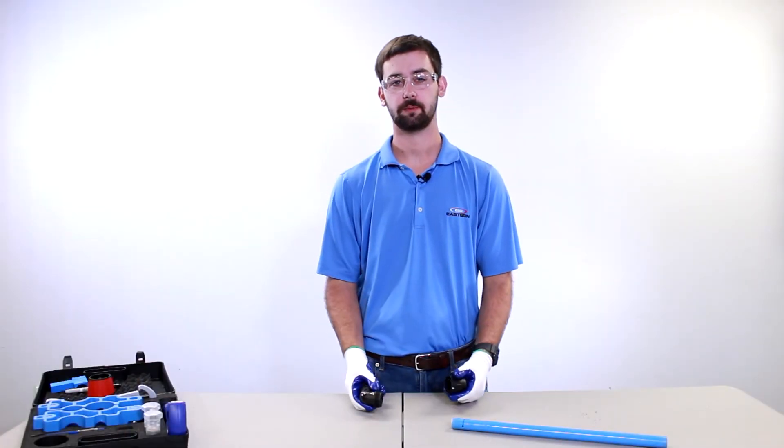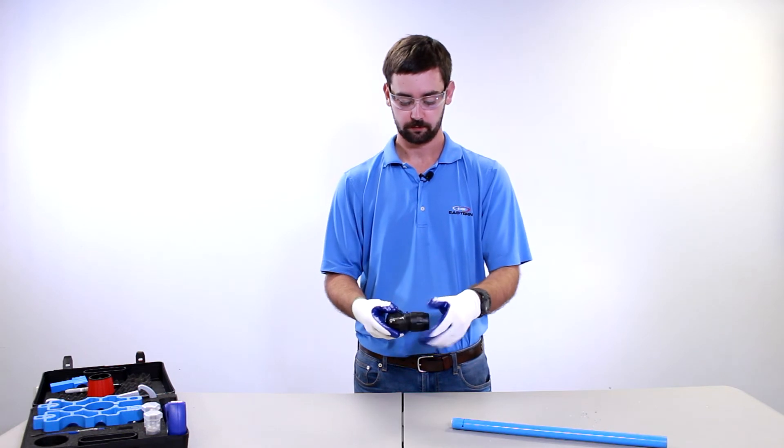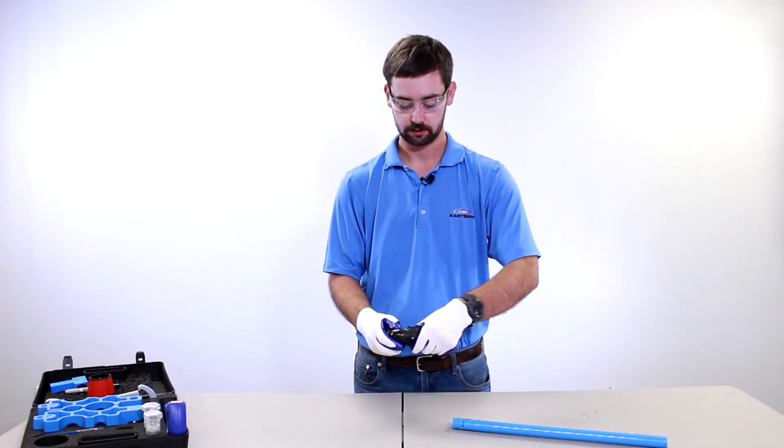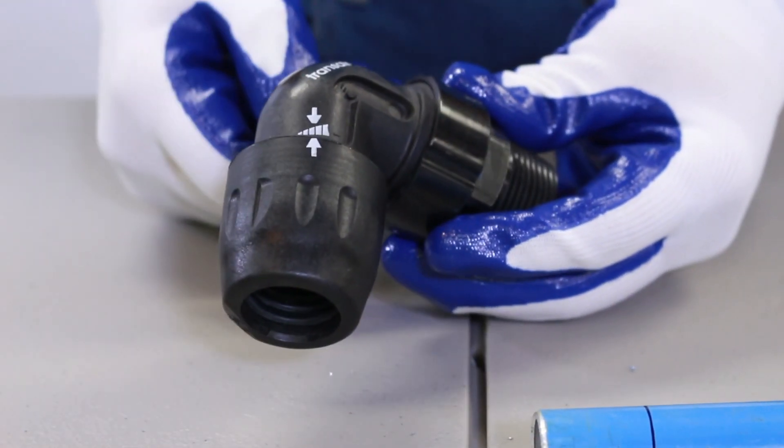So whether you just pull the fitting out of the bag or you just took it off another piece of pipe, they are reusable. So all you do is put the nut on here and you want to just turn it to where it gets nice and snug and you line the arrows back up and then you're ready to use it again.